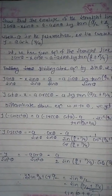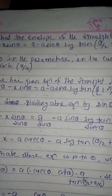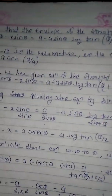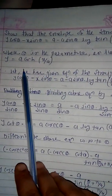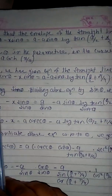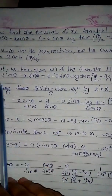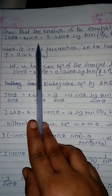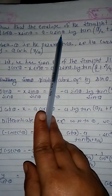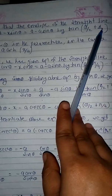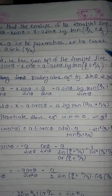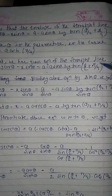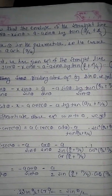The question is: show that the envelope of the straight line y·cos θ − x·sin θ = a − a·sin θ · log(tan(θ/2 + π/4)) where θ is the parameter, is the curve y = a·cosh(x/a). Let the given equation of the straight line be taken as equation number 1.